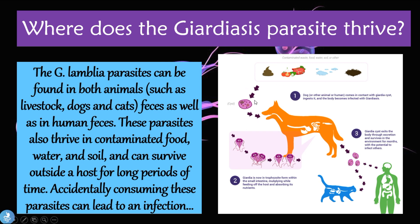Although it is ingested from these different sources in the cyst form — its inactive state — once it reaches the host's intestine, it changes into the trophozoite form and begins to multiply quite rapidly. Once it multiplies and fully infects the intestinal system, it begins to cause devastating symptoms such as nausea, extreme tummy pain, vomiting, fever, and weight loss. The Giardia cysts then exit the body through excretion and survive in different environments for months, with the potential to infect others, contaminating food sources, soils and vegetables — and so the cycle continues.